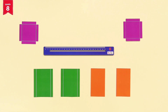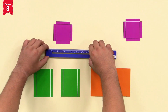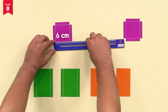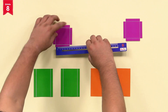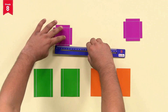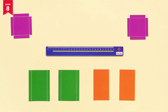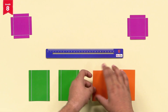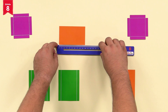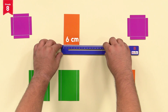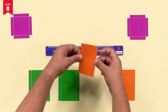First, we will measure the size of purple color square cards with the help of a ruler. Here it is 6 cm and 6 cm. Then, we will measure the size of orange color rectangular cards with the help of a ruler. Here, we are using the orange color rectangular cards of length 10 cm and breadth 6 cm each.